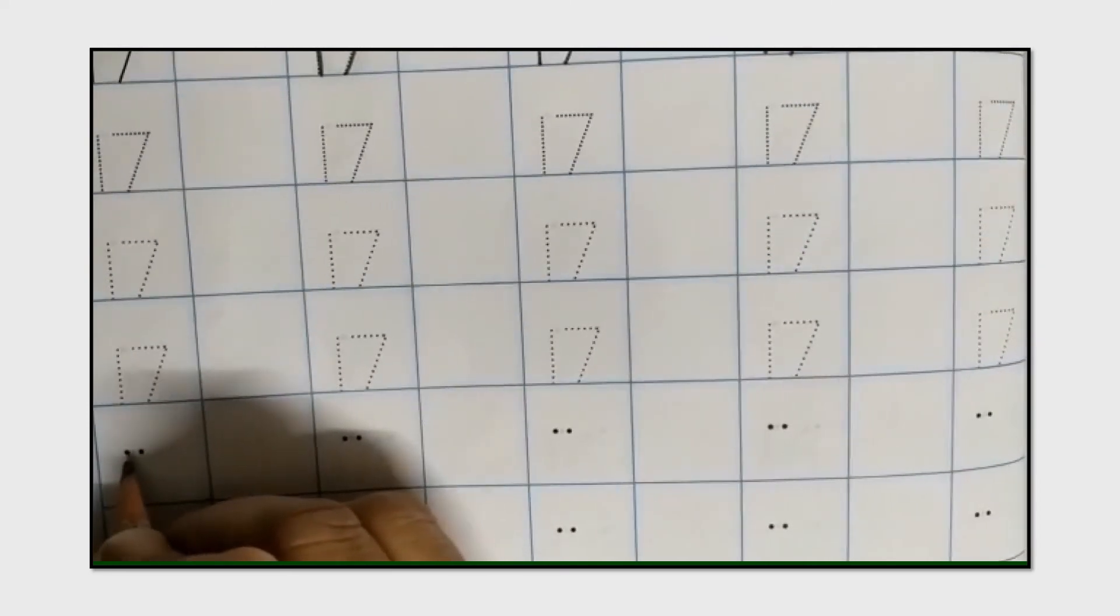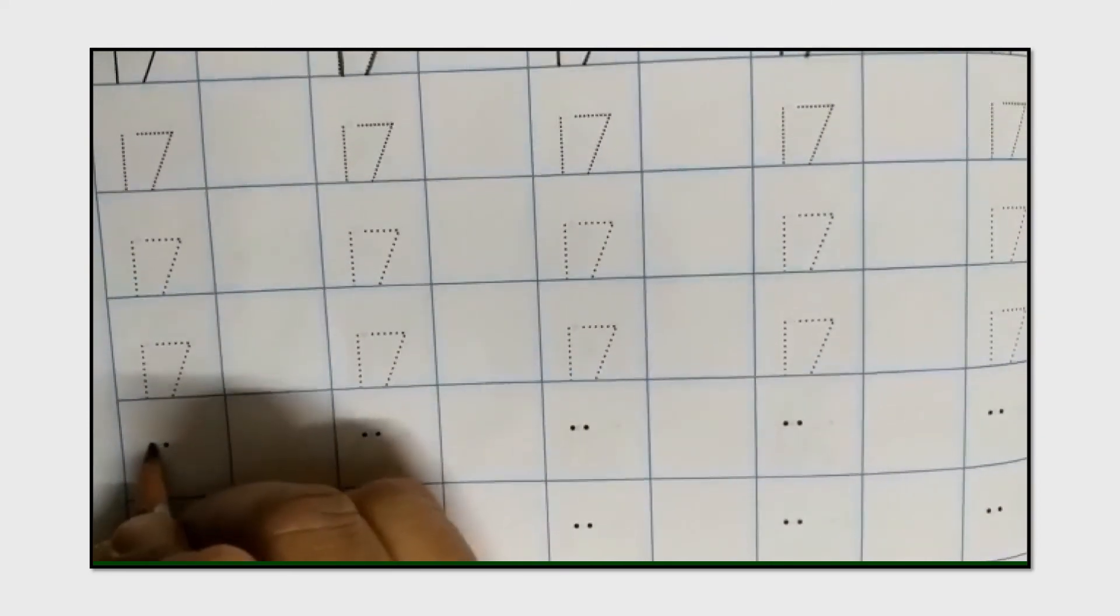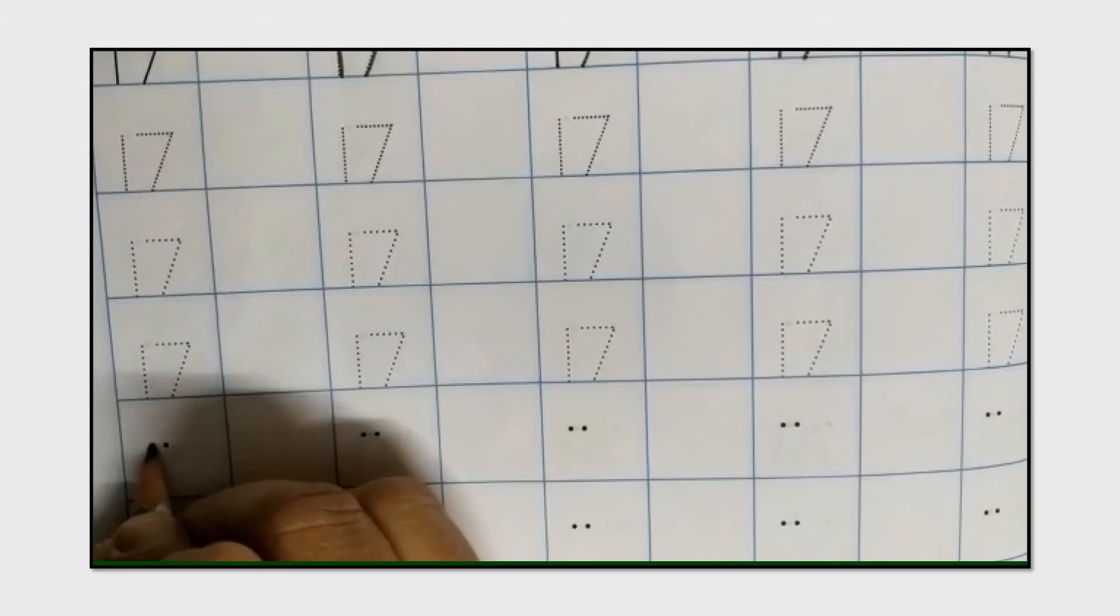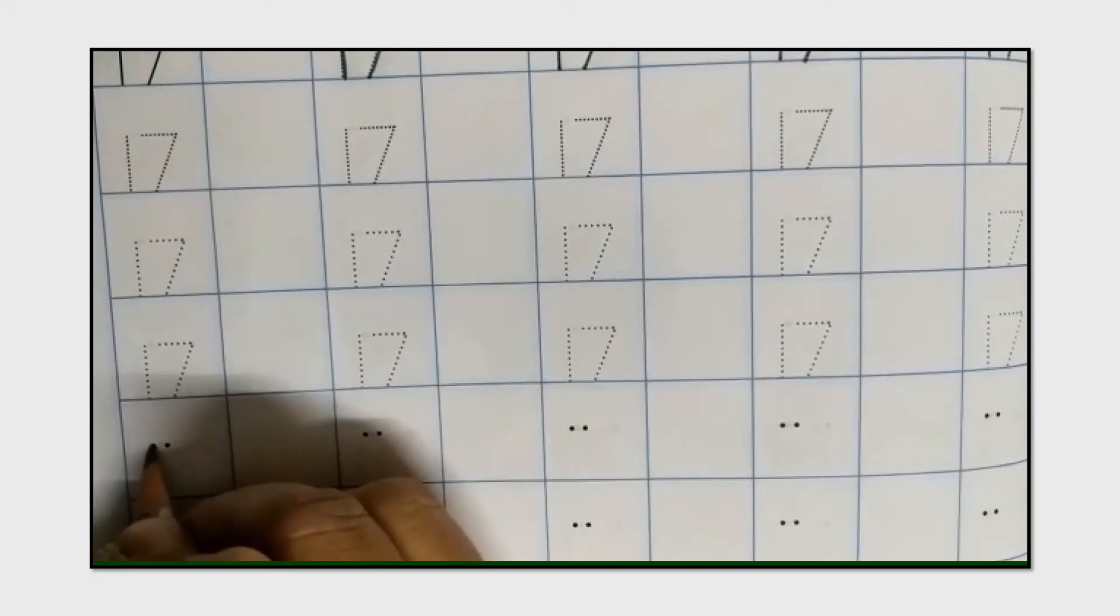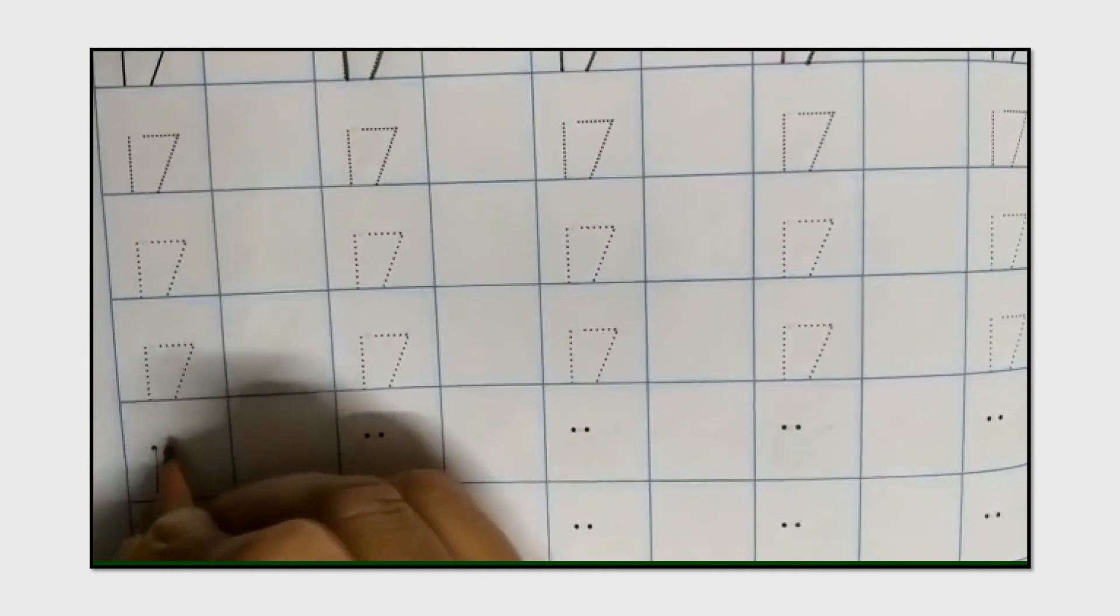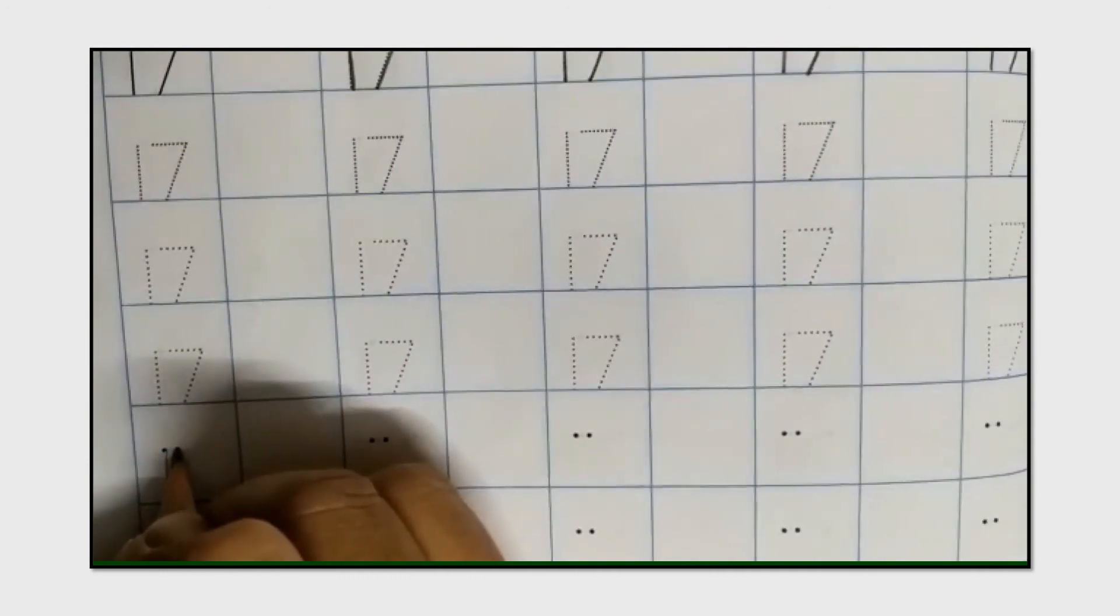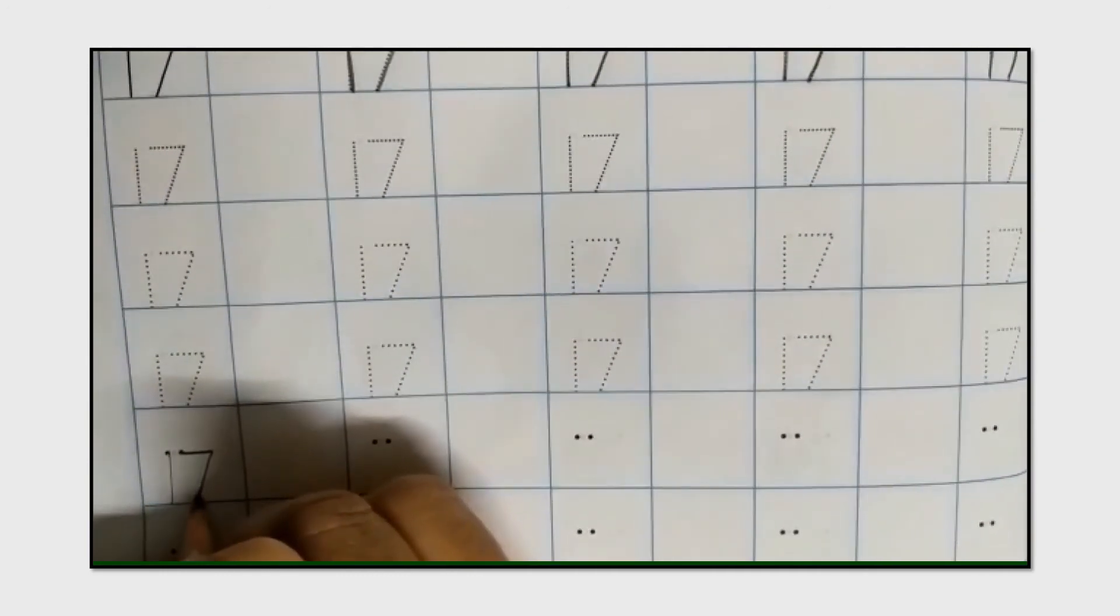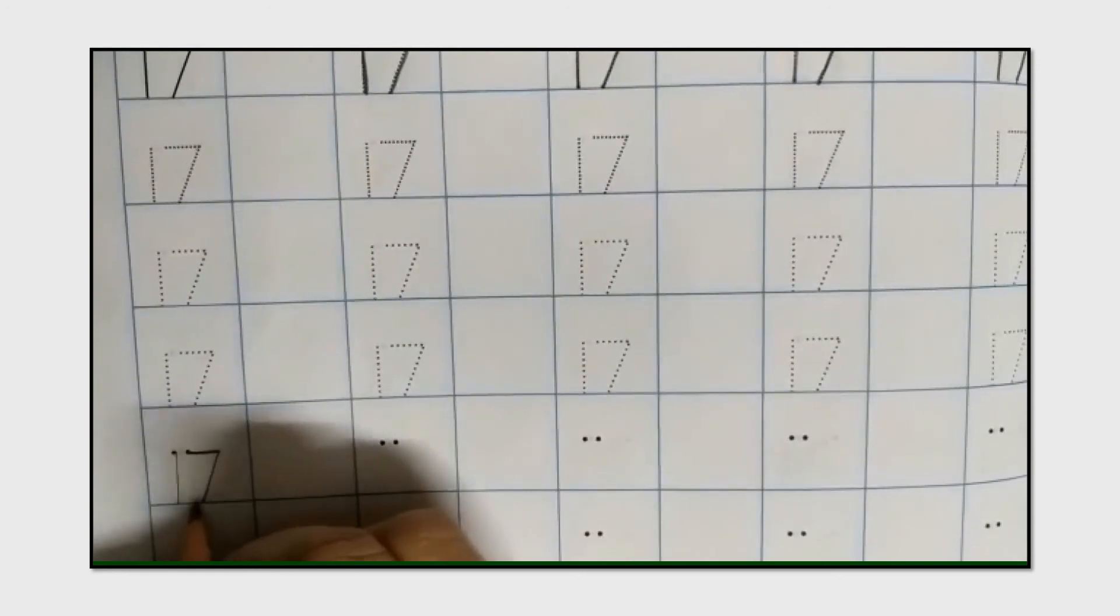Now, we will write number 17 with single dots. So, in first dot, we will write number 1. In second dot, we will write number 7. So, this is number 17.